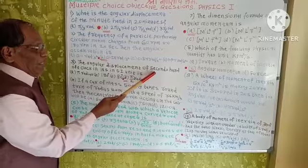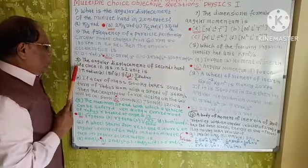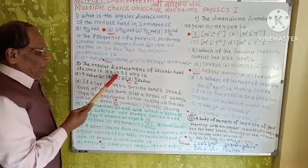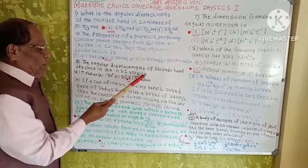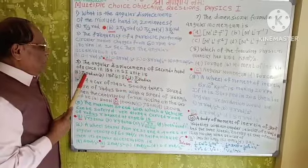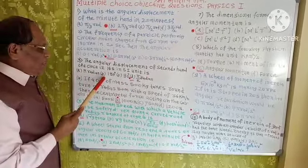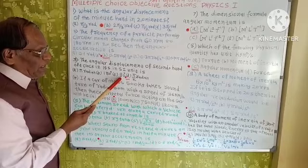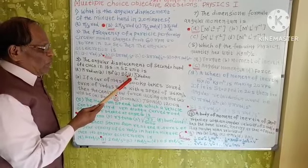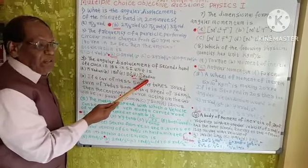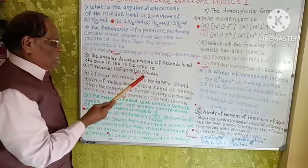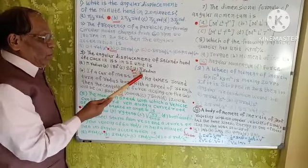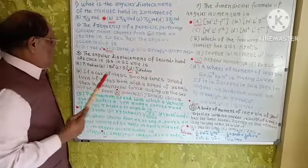Question 3: The angular displacement of the seconds hand of a clock in 15 seconds in SI units is: A) pi radian, B) 180 degrees, C) 90 degrees, D) pi by 2 radian. The correct option is D, i.e., pi by 2 radian.